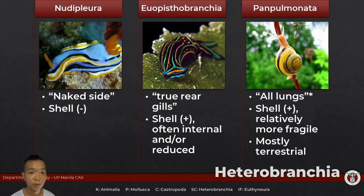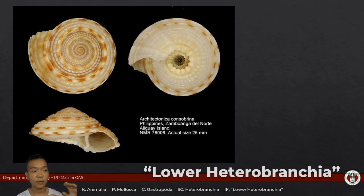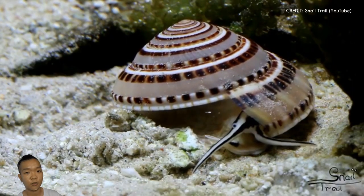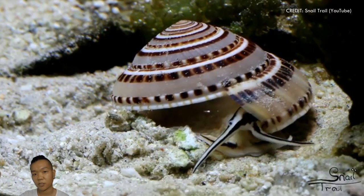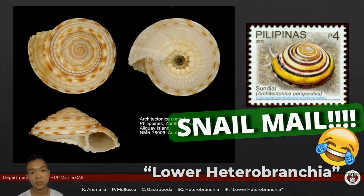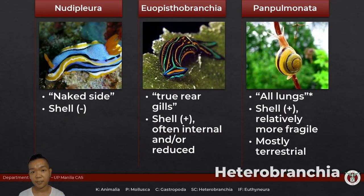We are moving on to clade Heterobranchia — this is where opisthobranchia and pulmonata belong. Heterobranchia also has a grouping called lower Heterobranchia, the members of which are grouped together on a molecular or DNA basis. Architectonica was previously placed under Mesogastropoda, but they realized it's part of Heterobranchia — the sundial shells. When we say Heterobranchia, 'hetero' means different, 'branchia' means gills — different in the sense that they're positioned either at the posterior or to the side.